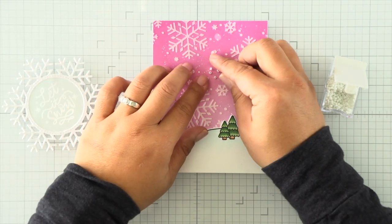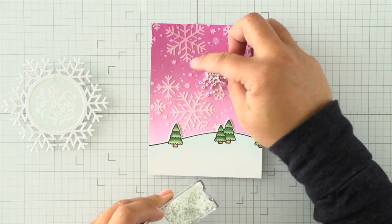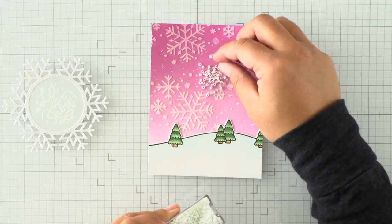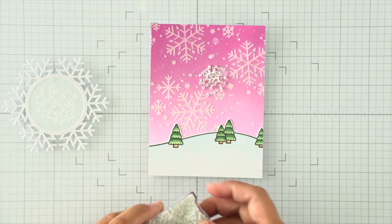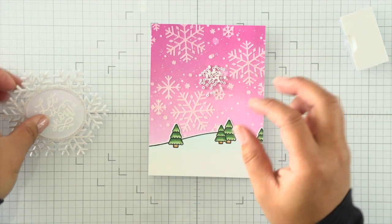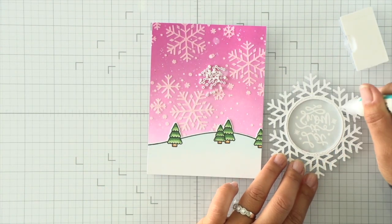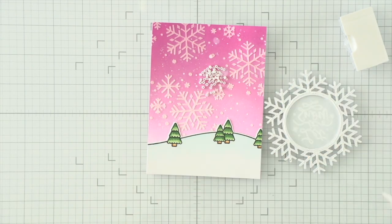Because that pearlescent vellum is a little bit more opaque, I'm going to use some white seed beads so you can still see and hear the shaker elements. I've added that to the center of my card and I'll add some liquid adhesive on the back of my snowflake and then adhere that to seal all those seed beads in place.